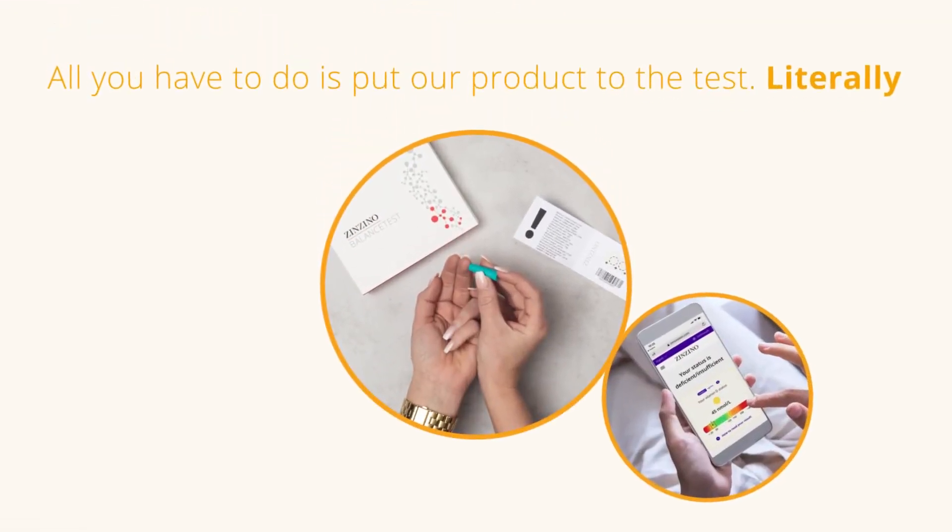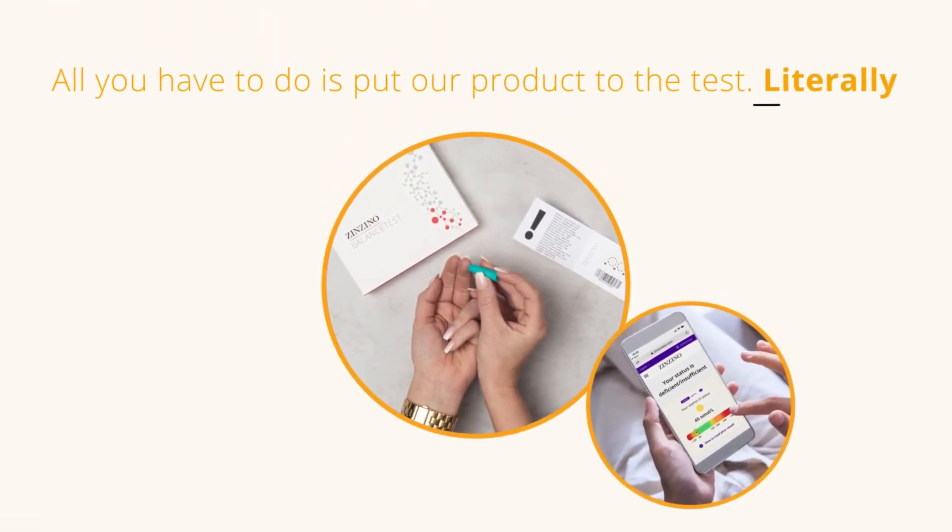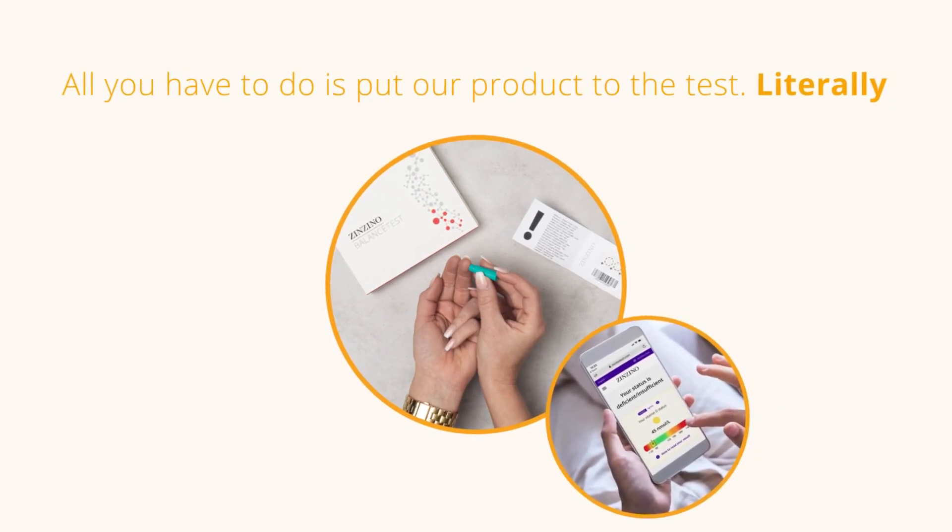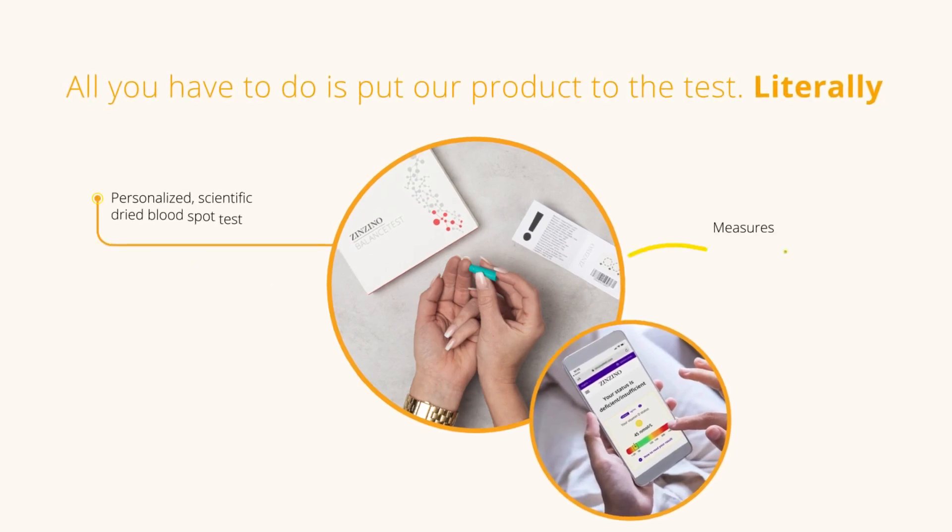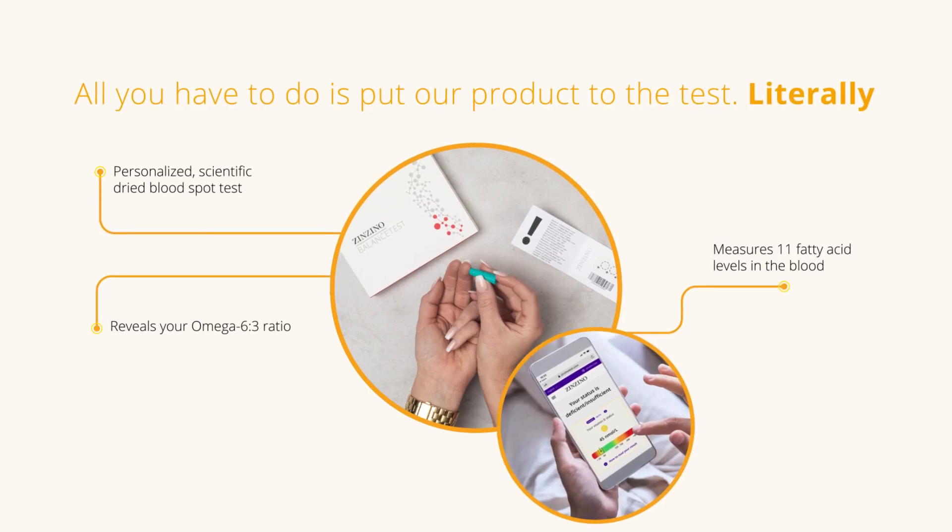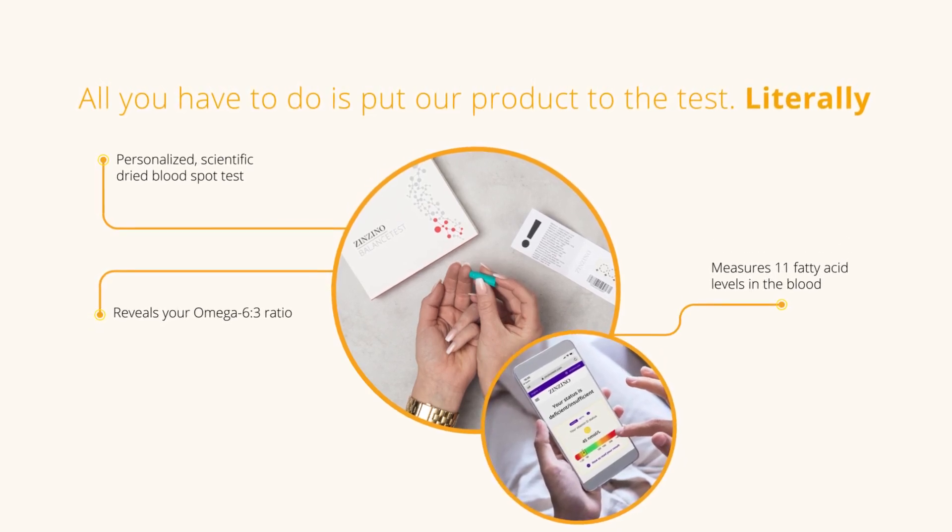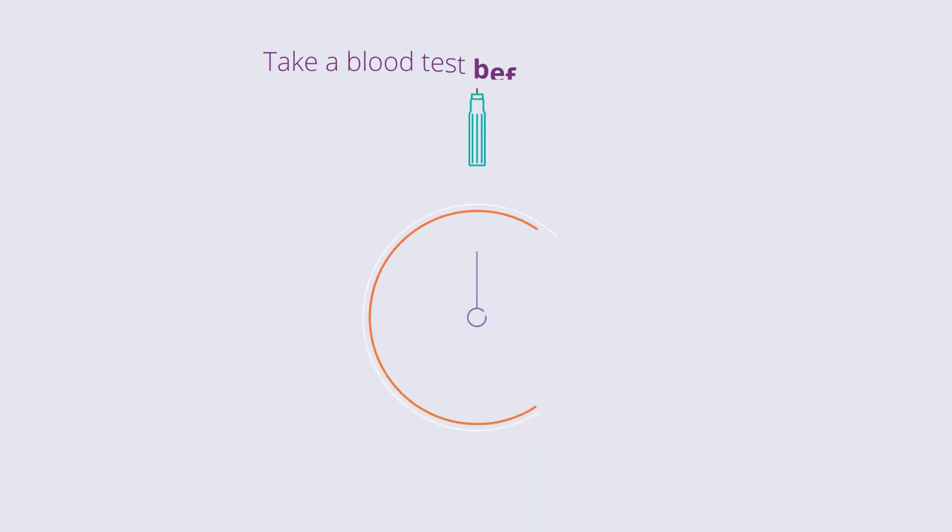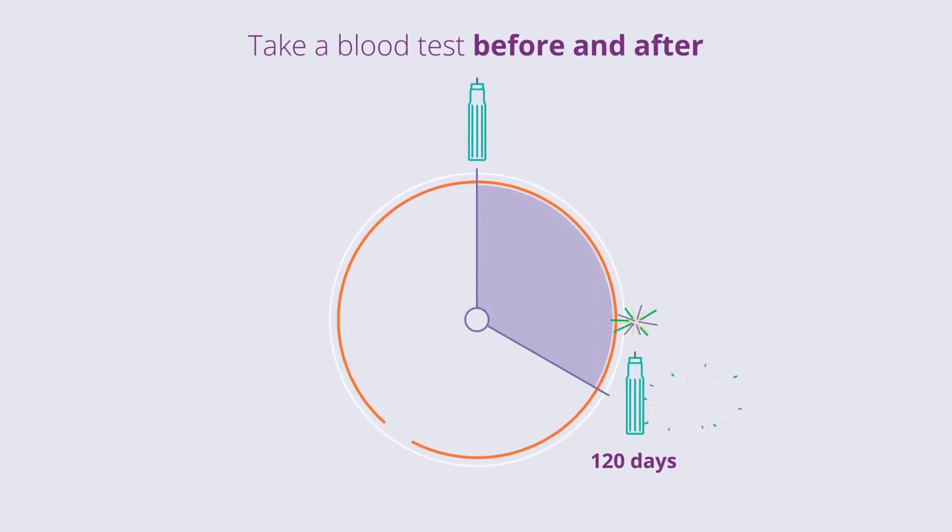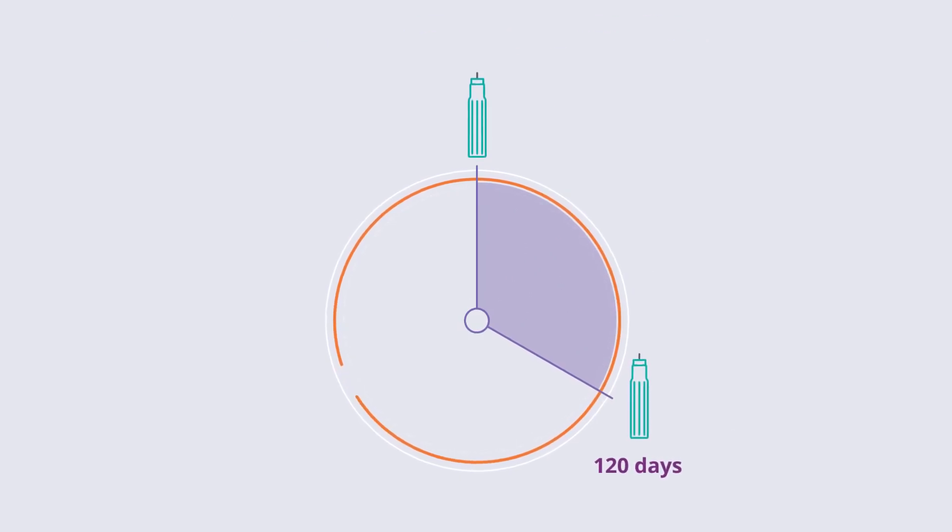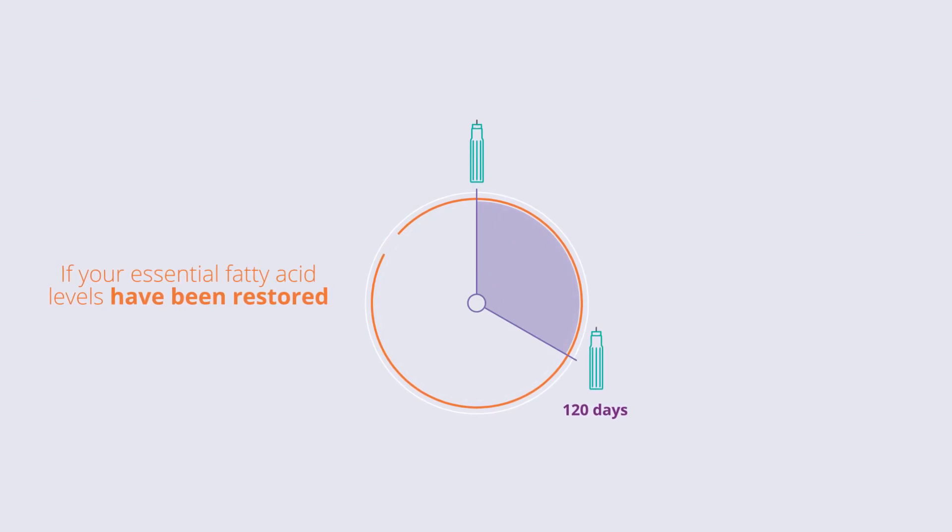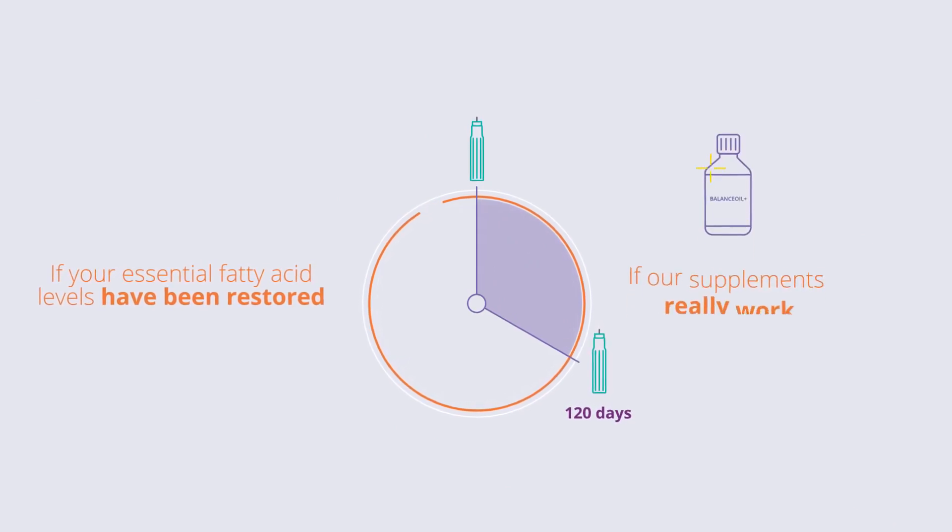All you have to do is put our product to the test. Literally. The Zinzino Balance Test is at the heart of our Balance concept. A personalized, scientific dried blood spot test that reveals whether your current omega-6 to omega-3 ratio is out of balance. You take the test before you start using our Balance Oil Plus, and then again after 120 days. This way, you get to see for yourself if your essential fatty acid levels have been restored, and we get to prove that our supplements really work.